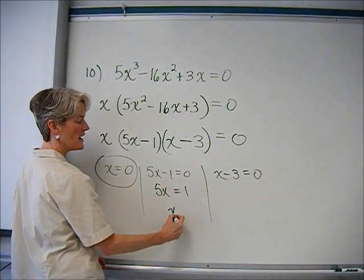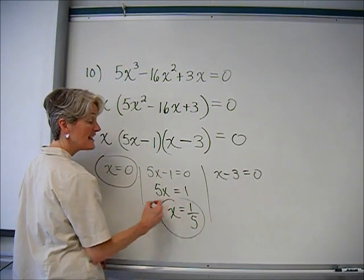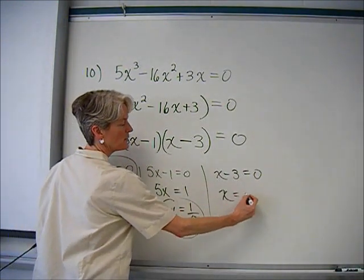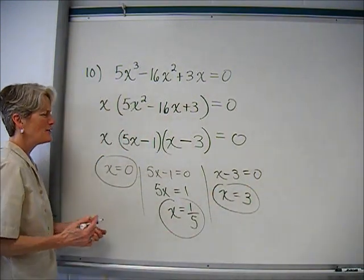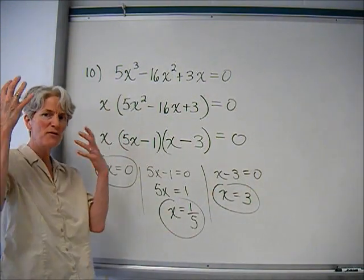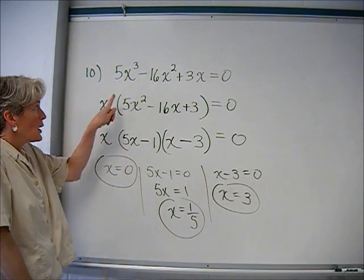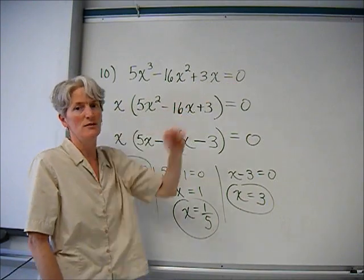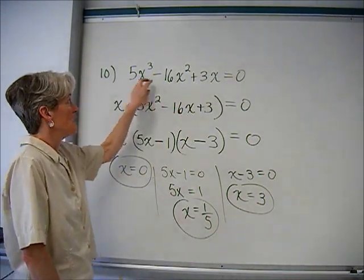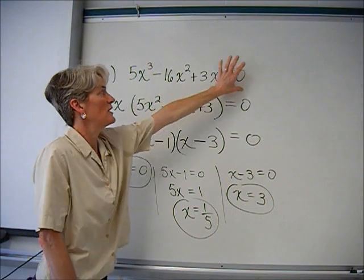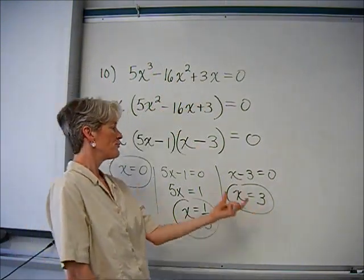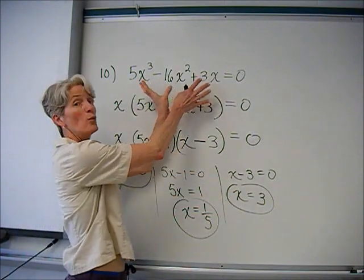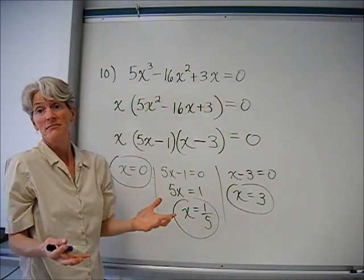That produces my three solutions. x equals zero — already done. For 5x minus 1 equals zero: divide by 5 to get x equals one-fifth. For x minus 3 equals zero: add 3 to both sides, x equals 3. A solution means if I plug zero into the original equation I get 0 equals 0; plug in one-fifth, I get 0 equals 0; plug in three, I get 0 equals 0. These all make the equation work.